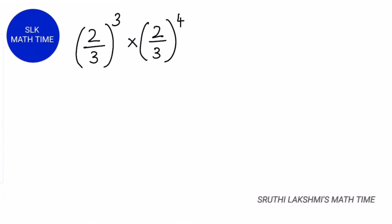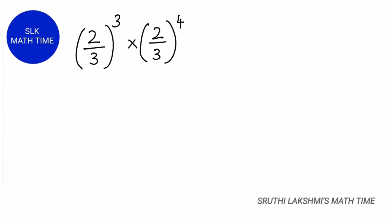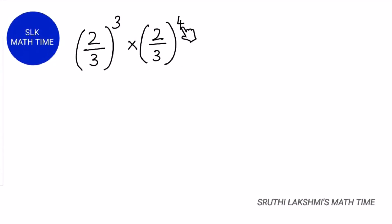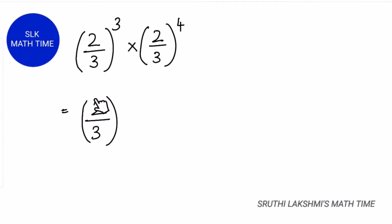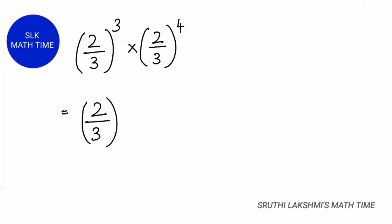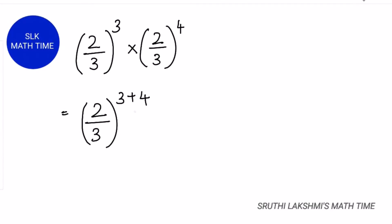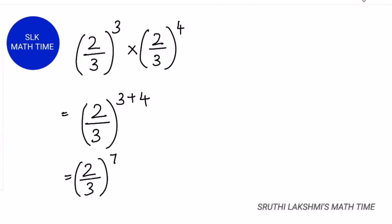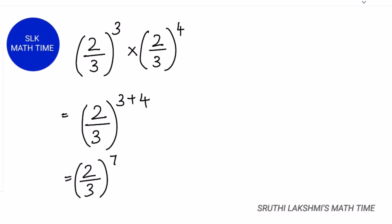Let's see another example: 2 by 3 the whole power 4. The common base here is 2 by 3, and we add the exponents: 3 plus 4 equals 7. So it's 2 by 3 the whole power 7.